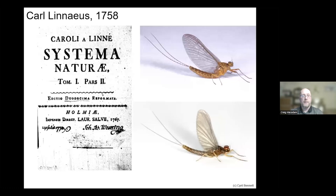Linnaeus named and described many mayflies in his Systema Naturae. He described species we have in this country — the pond olive Chloeon dipterum, the iron blue dun Baetis muticus, and various others — and was the first person to put proper descriptions to these species.